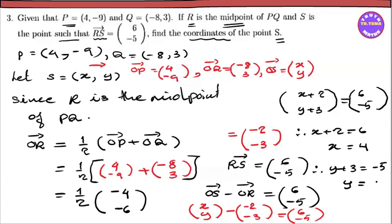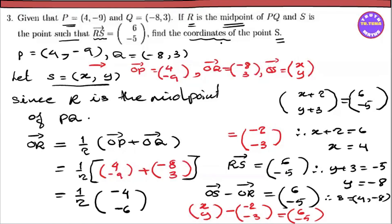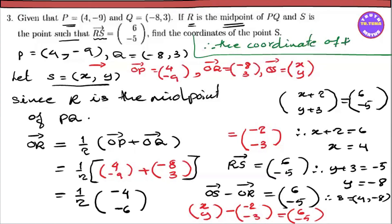So y plus 3 gives the result. The xy vector equals (minus 3). The coordinate of S is found: the point S equals (4, minus x). So the coordinate of the point S is equal to (4, minus x).